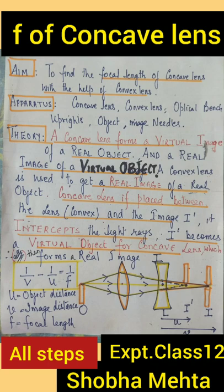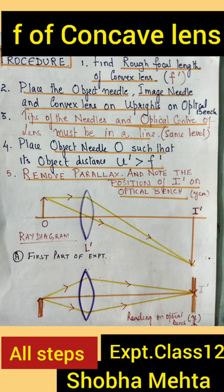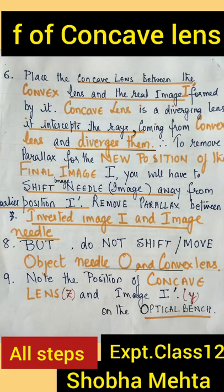Then, the concave lens is placed between the convex lens and the position of I dash — meaning it intercepts the rays before they form the image I dash. Now, I dash serves as the virtual object for the concave lens, which forms a real image at I.